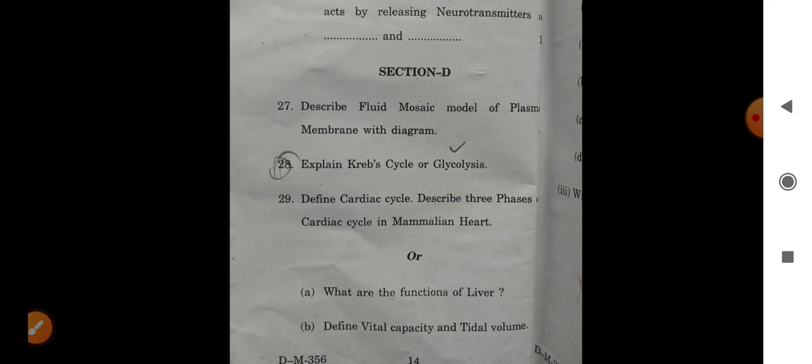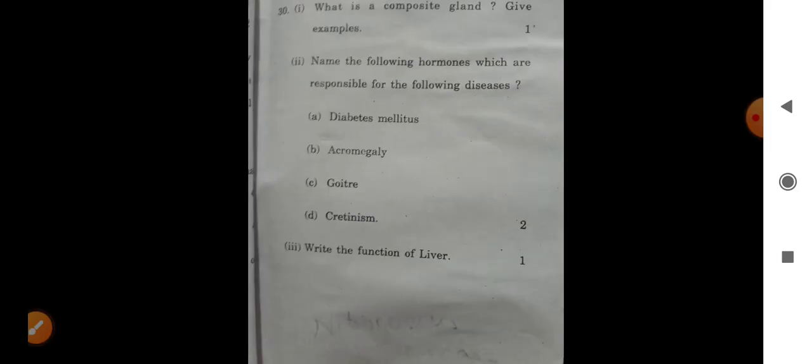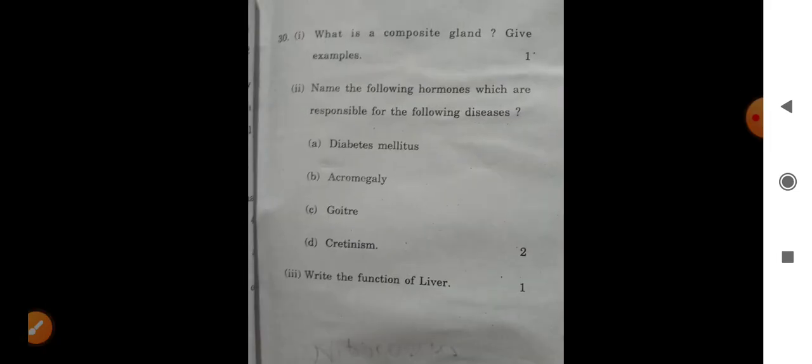What are the functions of liver? Define vital capacity or tidal volume. Question 32: What is a composite gland? Give example. Name the following hormones which are responsible for the following diseases. Write the function of liver.